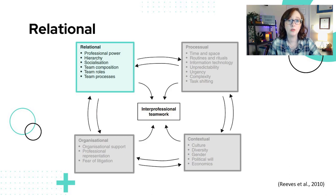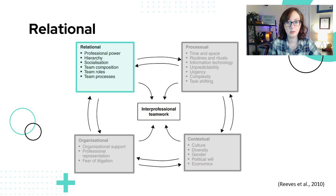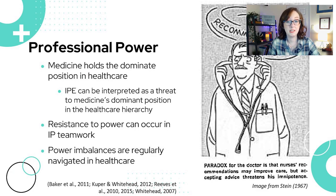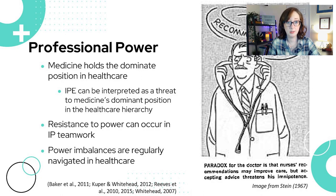Relational includes factors that affect relationships shared by professionals. The first three — professional power, hierarchy, and socialization — were covered in my video on social science perspectives and IPE in our previous module, so I won't go into great depth here. Professional power is concerned with professionalization and power. Within healthcare, medicine holds the dominant position and holds considerable influence on policy making, the care delivery process, and collaboration.